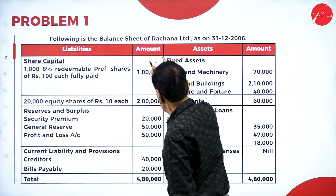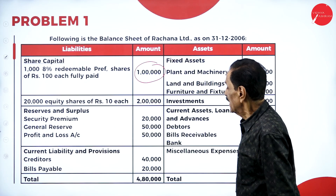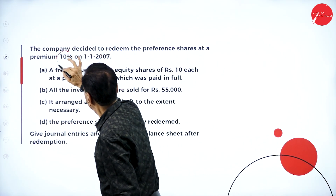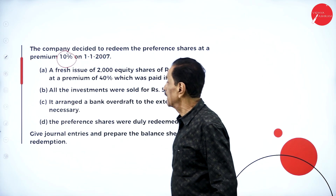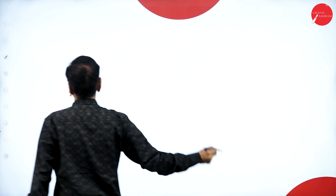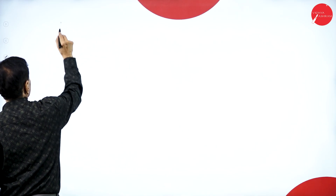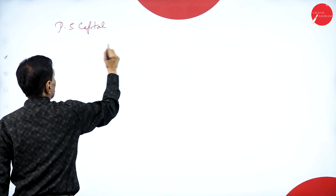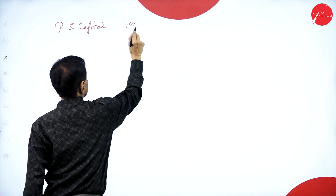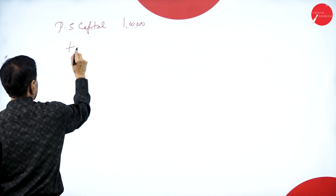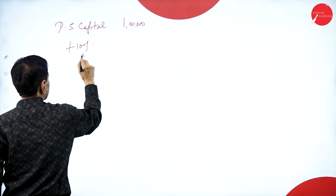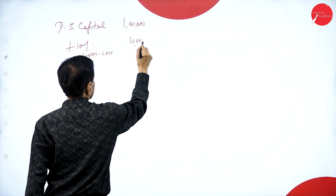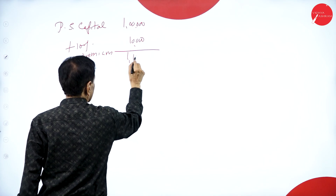We'll move on to the problem now. Your preference share capital is one lakh, and it is going to be redeemed — two thousand shares at a premium of ten percent. So the face value is one lakh plus ten percent premium, making the total amount payable one lakh ten thousand.